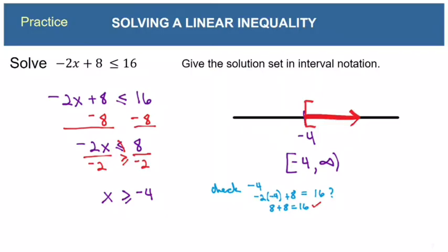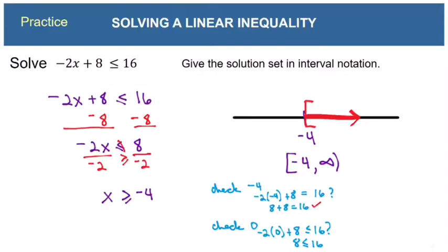Now check something in the solution interval between negative 4 and infinity — just pick any easy number. You're not looking for both sides to be equal; you're looking for the inequality to be true. I choose 0: negative 2 times 0 plus 8 gives 8 is less than or equal to 16, which is true. That confirms the shading is in the right direction.